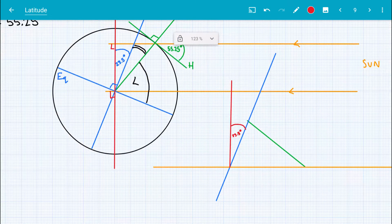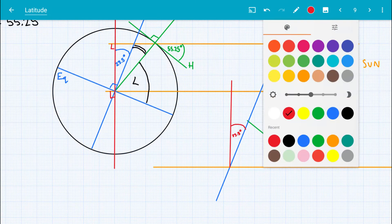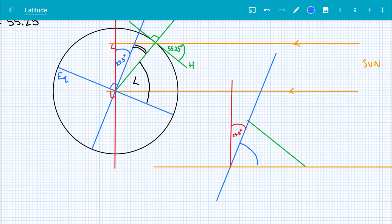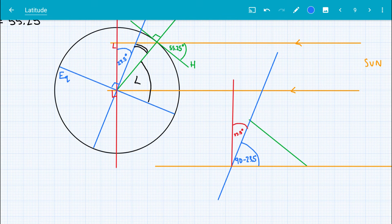And so this angle, let's change color to blue, this angle here is going to be 90 subtract 23.5 degrees. It has to be because these are 90 degrees to each other.